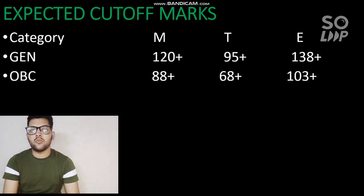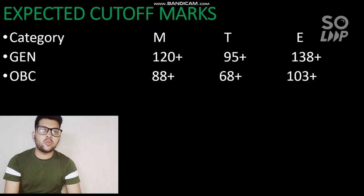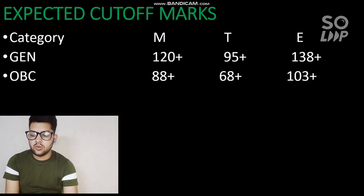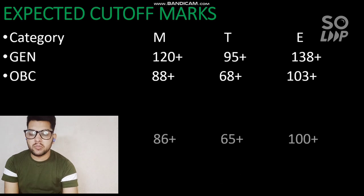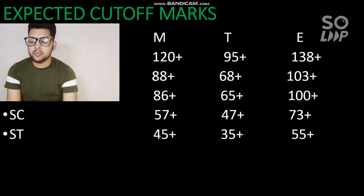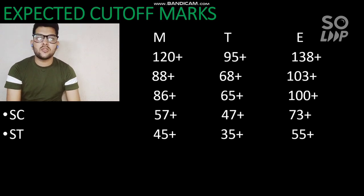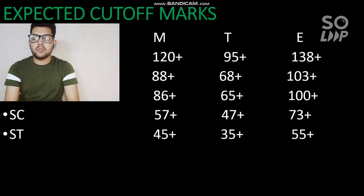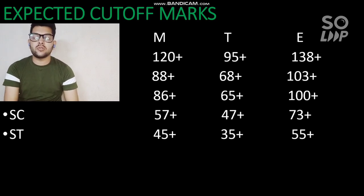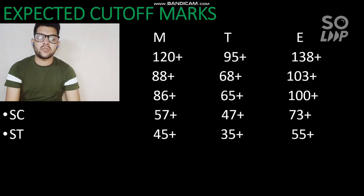For tough and easy paper cutoffs you can check sideways. I advise trying to improve your accuracy plus speed - if the paper is tough then accuracy will help, and if the paper is easy then speed will help. Work on that in the last days if your preparation is good. For EWS, 86 plus marks for moderate paper; for SC, 57 plus; and for ST, 45 plus. These are the minimum marks needed to qualify for JEE Advanced.